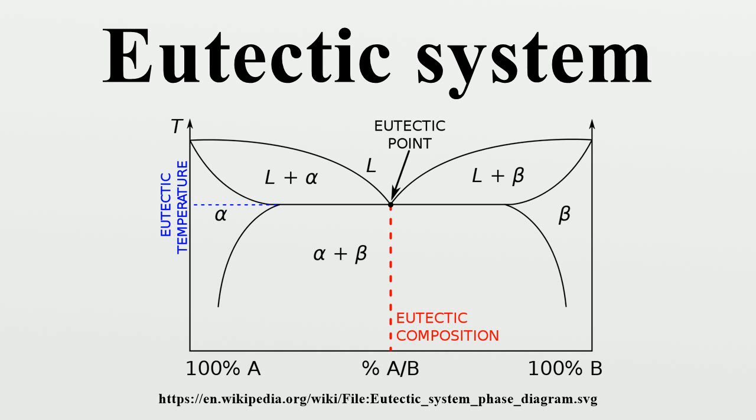Such a transformation exists in the iron-carbon system, as seen near the upper left corner of the figure. It resembles an inverted eutectic, with the delta phase combining with the liquid to produce austenite at 1,495°C and 0.17% carbon.